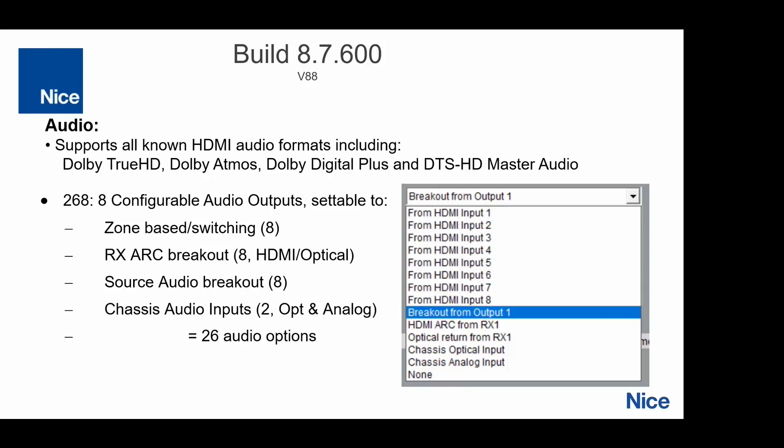The V88 has audio; the V44 has no external audio outputs. We noticed people were mostly using these for audio breakouts — taking the audio out and going to another audio routing matrix. The way we did it before was a little tough because it was always a zone-controlled output. We still support that, but we also added breakouts for ARC, whether HDMI or optical, and the source breakout. So you can say audio output one always comes from source one, no matter what — straight up breakouts to make this easier.